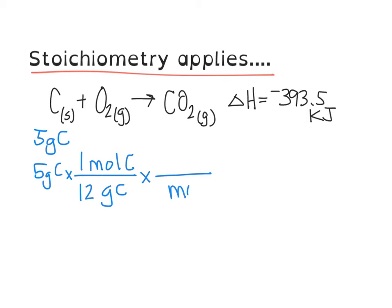Now moles of carbon go on the bottom and if we are trying to find the amount of ΔH that we actually use or create with our five grams, we're going to plug that number into our reaction and treat it just like we would another part of the stoichiometry.